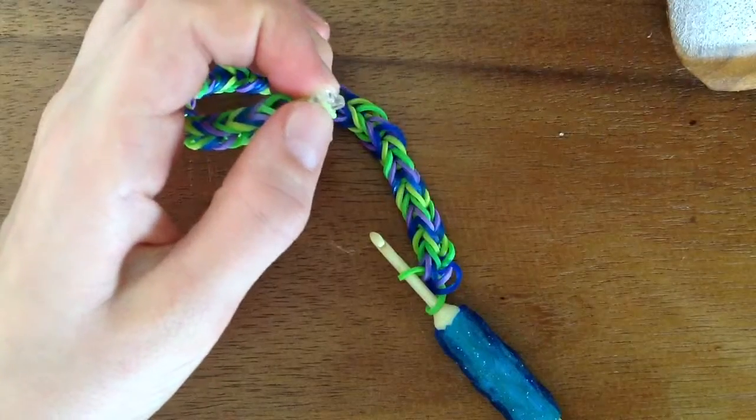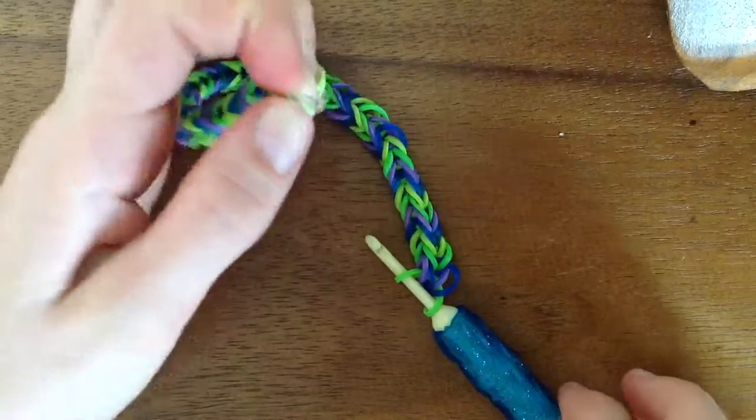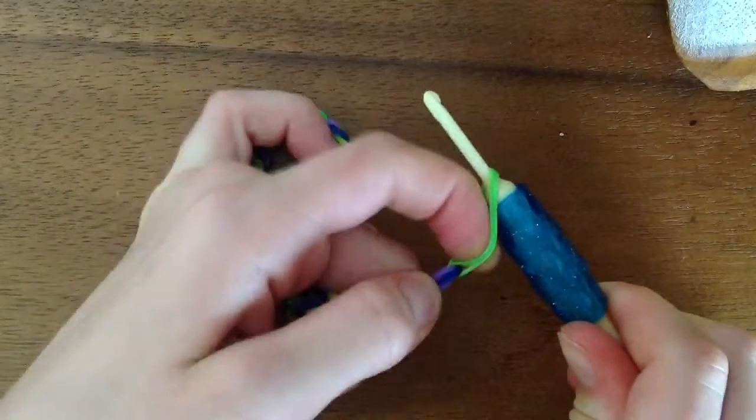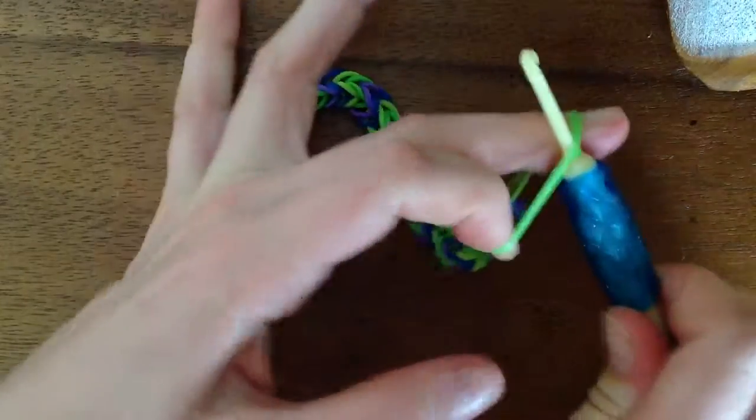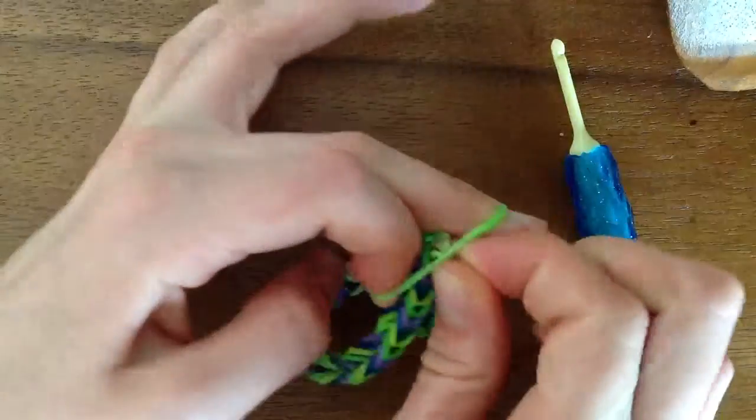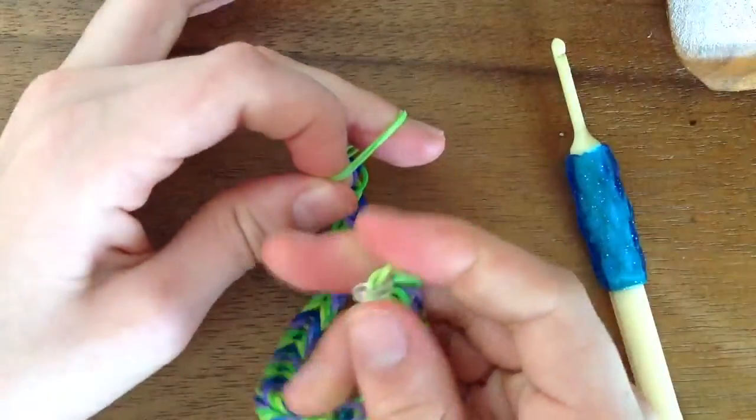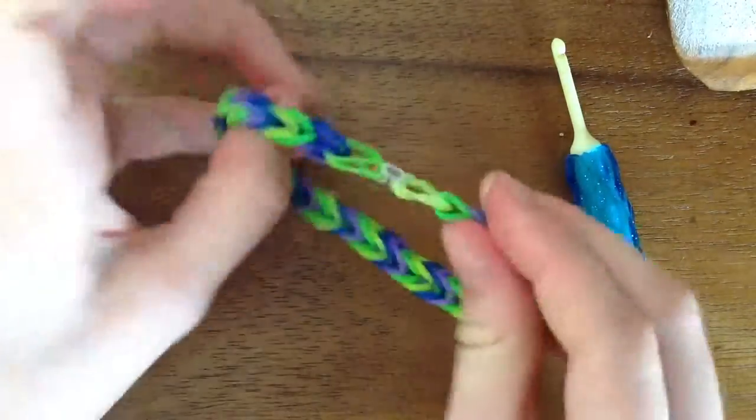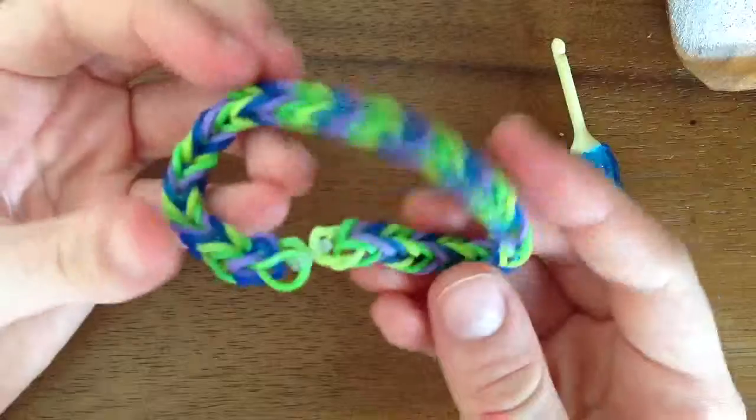Then you are going to take this side off the crochet hook by sticking your finger in, taking it out, and then you stick the C-clip on the rubber band. And you've got your fishtail.